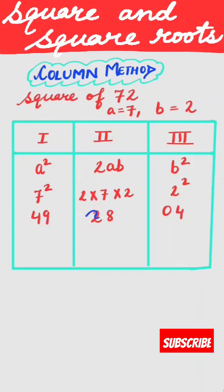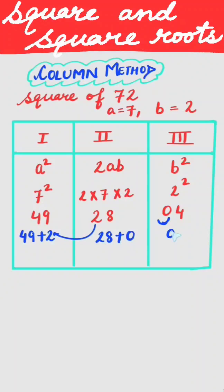We add the tens and other digits of column 2 to the value of column 1, so this becomes 49 + 2. Similarly, we add the tens and other digits of column 3 to the value of column 2, except the unit digit which remains as is.